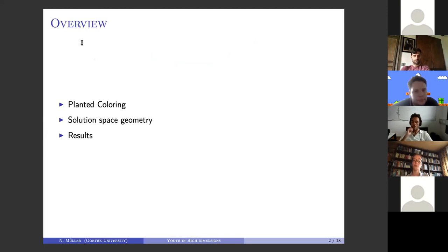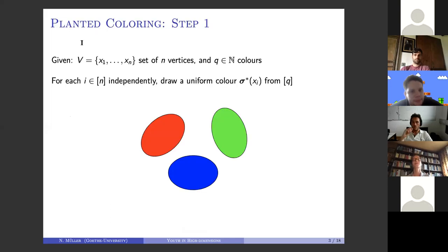This is the planted coloring model. Afterwards, I would like to take the other point of view, which is basically from random constraint satisfaction problems, and present a very small sample of the results. So let me begin with planted coloring.